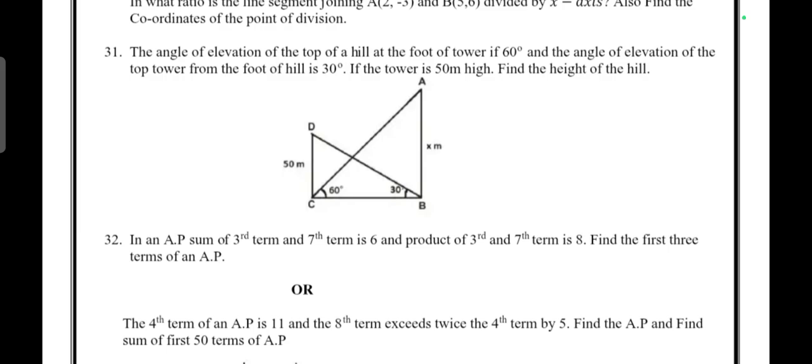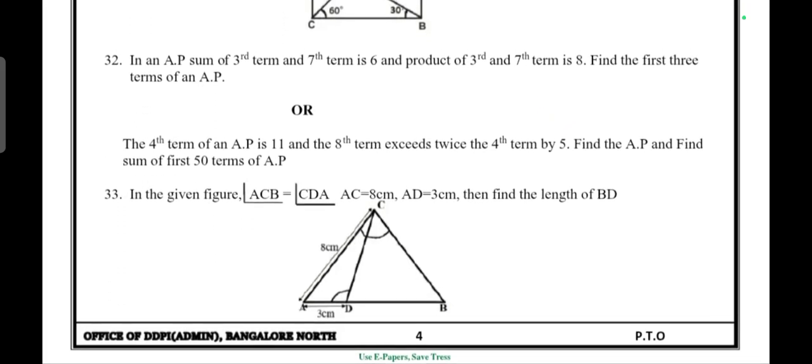Question 32: In an AP, sum of third term and seventh term is 6, and product of third term and seventh term is 8. Find the first three terms of the AP. OR the fourth term of an AP is 11, and the eighth term is twice the fourth term minus 5. Find the AP and the sum of first 50 terms.